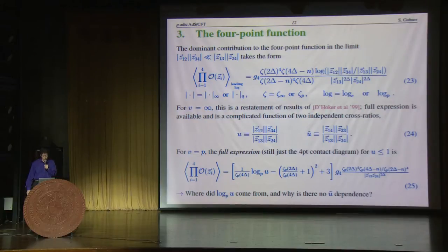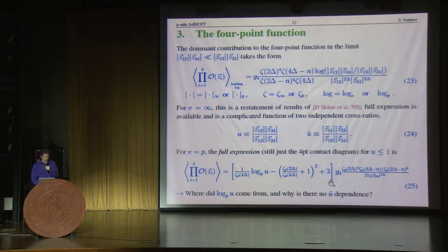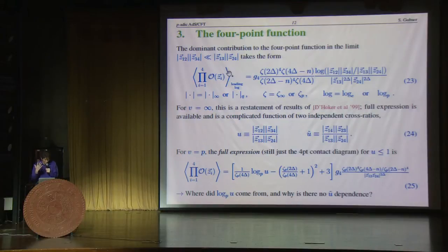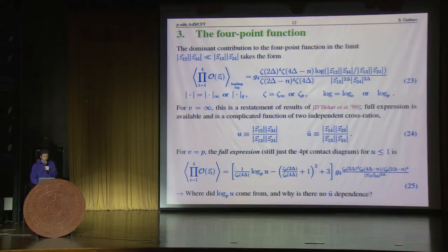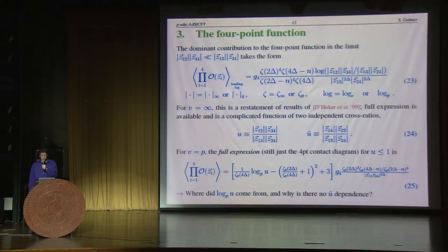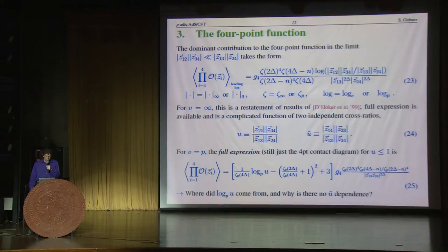Let's go right on to the four-point function, which is very entertaining because you can write it all in one line for the real case and the p-adic case, as long as we're only looking at the leading logarithmic behavior of the four-point function in the real case. By leading logarithmic behavior, I mean that if we take Z_{12} and Z_{34} small compared to Z_{13} and Z_{24}, then the complicated four-point function in real AdS-CFT has only this simple logarithmic behavior in that limit. And that same behavior is recovered from the p-adics using a calculation very similar to the one I just showed, so similar that I didn't even write subscript infinity or subscript p.